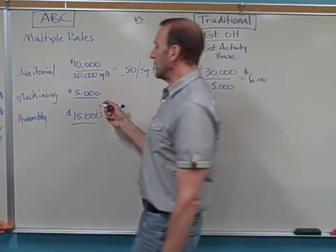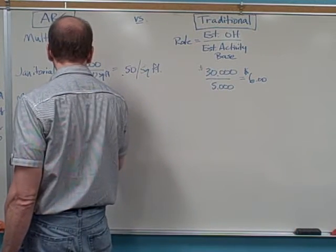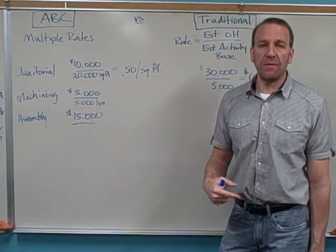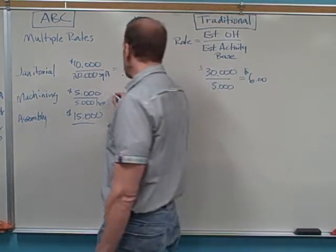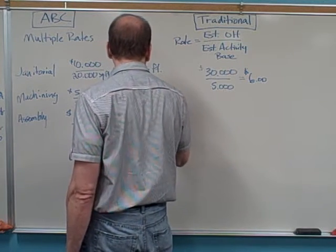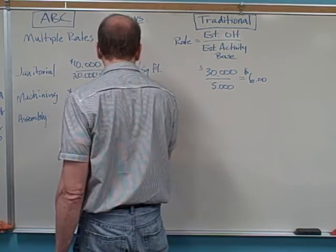Machining. Let's assume that there are going to be 5,000 machine hours. So the machines are going to be, we estimate they're going to run for 5,000 hours. So every time a machine runs, a dollar per hour will be allocated to that job.